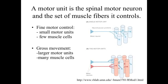A large motor unit — one spinal cord motor neuron controlling many muscle cells — is good for gross movement. The muscles of the back and upper legs are controlled by these large motor units. For fine motor control, such as movement of the fingers and fingertips, you want very fine, graded control. In that case, you have small motor units: still one spinal cord motor neuron, but innervating many fewer muscle cells, allowing very finite, regulated control.